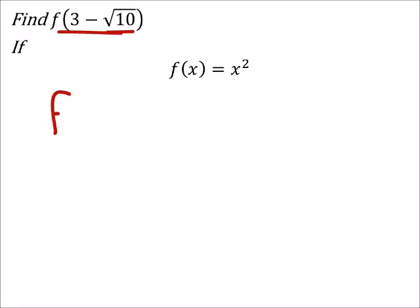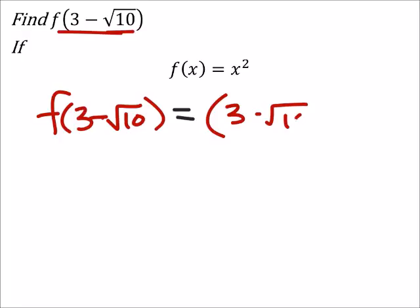So f(3 - √10) equals—we're replacing x with 3 minus the square root of 10, and we're going to square that because it was x squared.